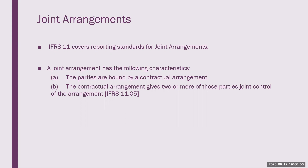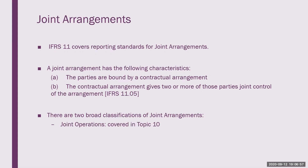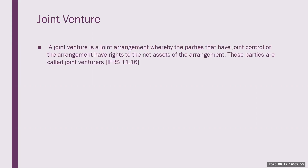There are two broad classifications of joint arrangements. They could be joint operations, which we will talk about in Topic 10, or joint ventures. A joint venture is a joint arrangement under which the parties that have joint control over the arrangement have rights to the net assets, i.e., the shareholders' equity of the arrangement.